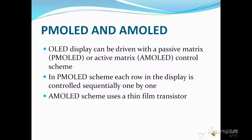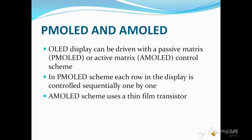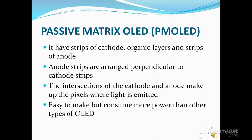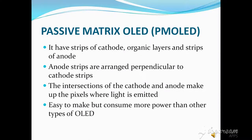There are two types of OLED: PMOLED and AMOLED. OLED displays can be driven with a passive matrix (PMOLED) or active matrix (AMOLED) control scheme. In PMOLED, each row in the display is controlled sequentially one by one. Passive matrix OLED has strips of cathode, organic layers, and strips of anode, arranged perpendicular to each other. The intersections make up the pixels where light is emitted, and brightness of each pixel is proportional to the amount of current. It is easy to make but consumes more power — best suited for small screens like cell phones and MP3 players.